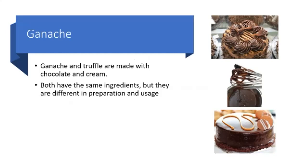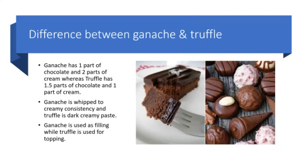Let's discuss about ganache. Ganache and truffle are terms which are used interchangeably; they are both made with chocolate and cream. However, even though they have the same ingredients, they are different in preparation and usage. Ganache has one part of chocolate and two parts of cream, whereas truffle has 1.5 parts of chocolate and one part of cream. After making, ganache is whipped to a creamy consistency, whereas truffle is not whipped and remains as a dark creamy paste. Ganache is used as filling, while truffle is melted and used for topping. However, in some cases like truffle cake, truffle can also be used as a filling.